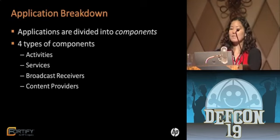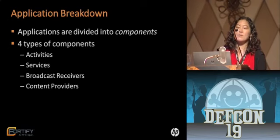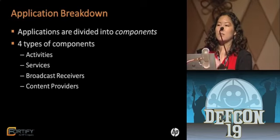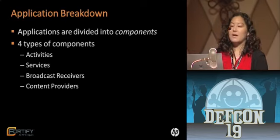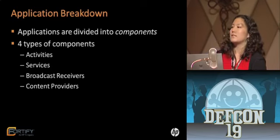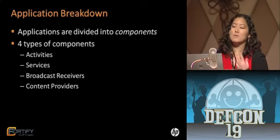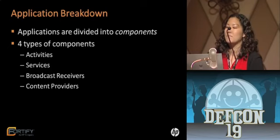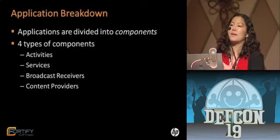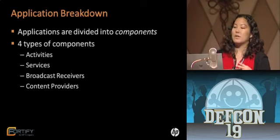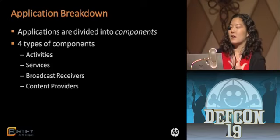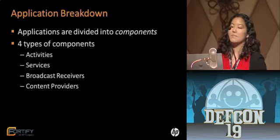Applications are divided into components, and there are four types. The first is an activity — basically the user interface; each screen you see in an Android application is its own activity. Services run in the background and don't interact with the user, making them well-suited for long-running processes like a music player. Broadcast receivers receive messages from other components, such as system event notifications or messages from third-party applications. Finally, content providers are basically databases.